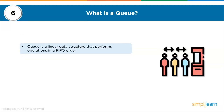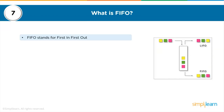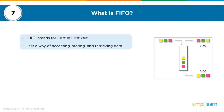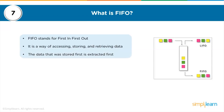What is a queue? A queue is a linear data structure that performs operations in a FIFO order. In a queue, the least recently added elements are removed first, as opposed to a stack. FIFO stands for First In First Out — it is a way of accessing, storing, and retrieving data where the data stored first is extracted first.